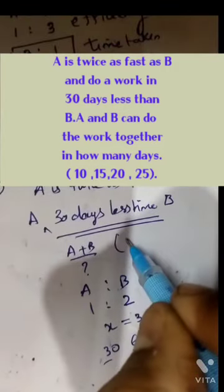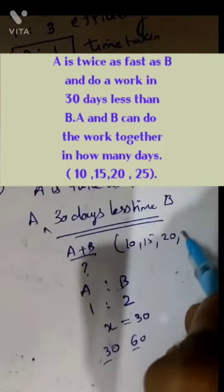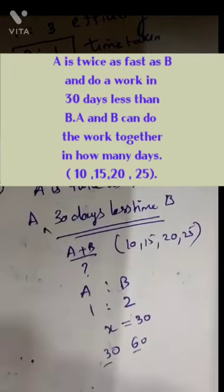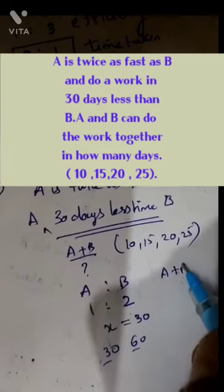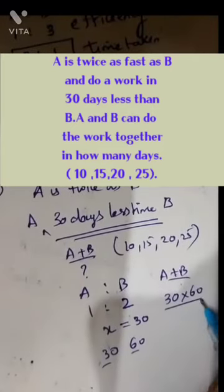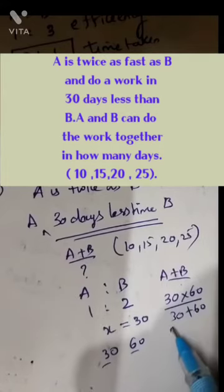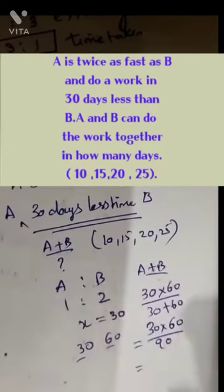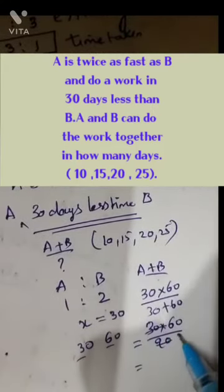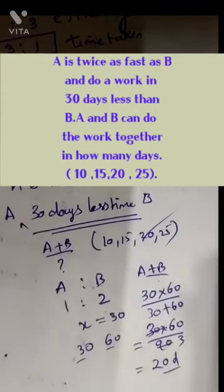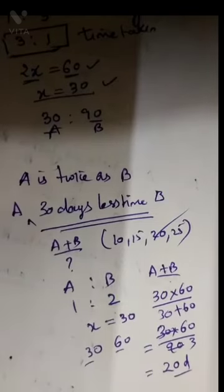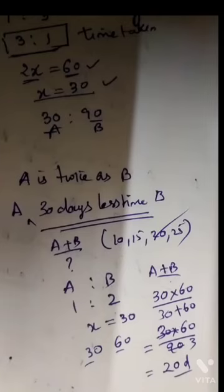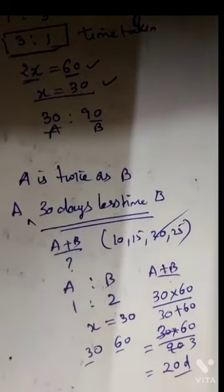Options are 10, 15, 20, or 25. A and B together means 30 into 60 divided by 30 plus 60, which is 1800 divided by 90, which equals 20. That is the right answer. So A is twice as good as B means 1 is to 2 ratio, 30 days difference, and A plus B together complete the work in 20 days.